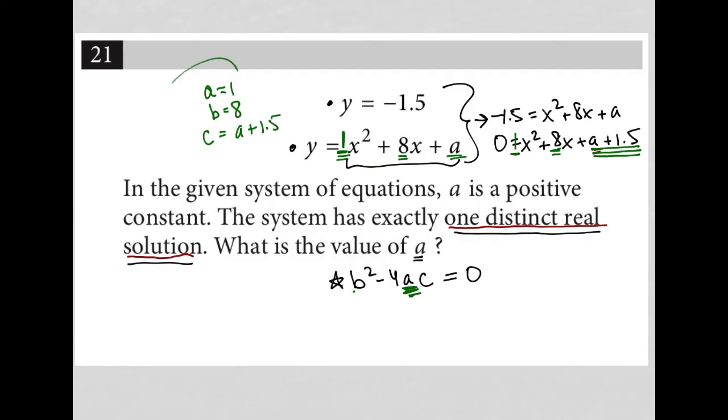When I plug all of this into our discriminant, I have 8 squared, which is 64, minus 4, times a, which is 1, times c, which is a plus 1.5. So in simplifying this, I'd have 64, minus 4a, minus 4 times 1.5, which is 6, so minus 6.